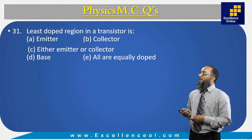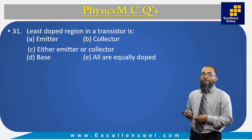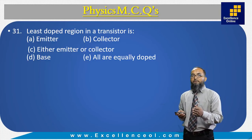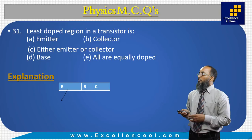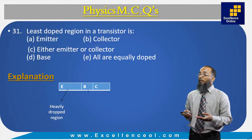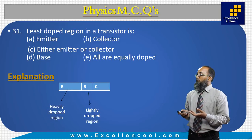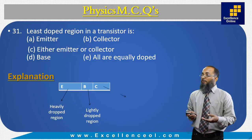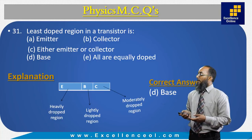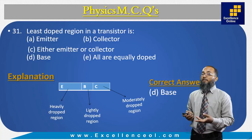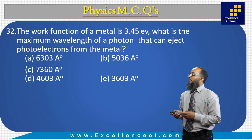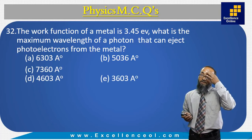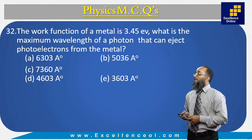The least doped region in a transistor — in a transistor, the emitter is heavily doped, the collector is moderately doped, and the base is lightly doped. Therefore the least doped region is the base. The correct answer is D.